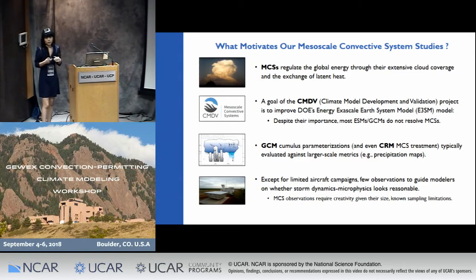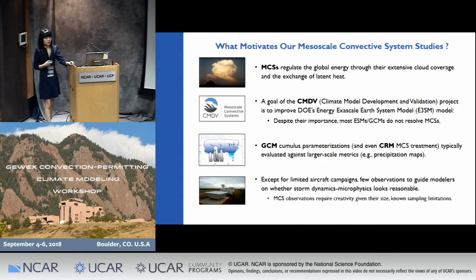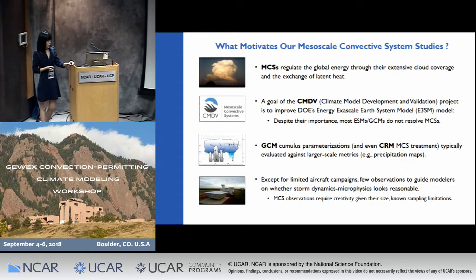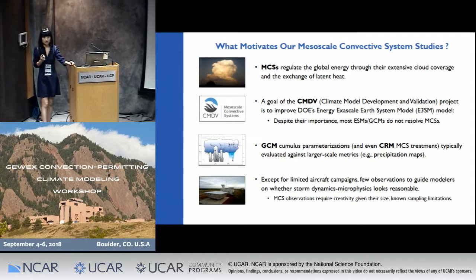Right now we don't do a very good job with GCMs, and even for the evaluation part, a lot of our efforts have been exclusive to precipitation maps. But that could be limiting because there are many different ways that you can get to the same precipitation field. Another big challenge is that we don't have a lot of observations — only a few aircraft studies are available for the community. So we need to come up with new observations that can give us more information on MCS systems and better constrain our modeling efforts.